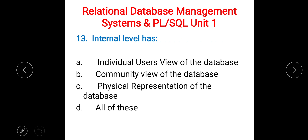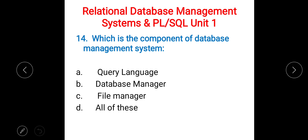Next: what does the internal level have? A) individual user view of the database, B) community view of the database, C) physical representation of the database, D) all of these. The right answer is C) physical representation of the database.